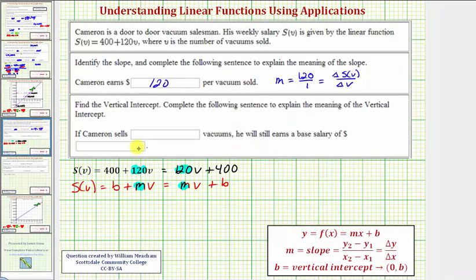Next we're asked to determine the vertical intercept and then determine the meaning of it. Well the vertical intercept is b, which would be the point (0, b). Notice how the vertical intercept is 400, which as an ordered pair would be the point (0, 400). So this also tells us the function value when the input is zero, meaning S(0) = 400. So if Cameron sells zero vacuums, he still makes a weekly salary of 400 dollars.